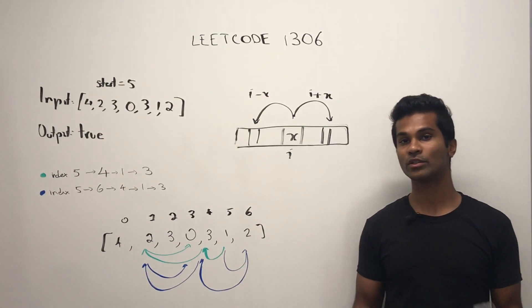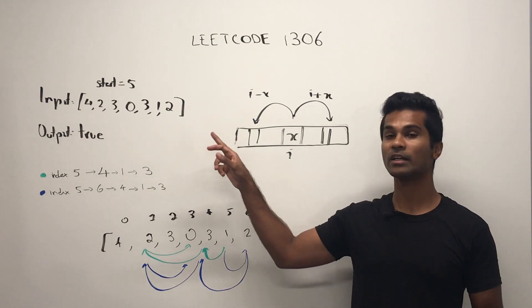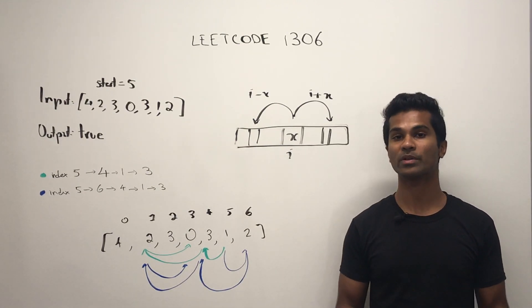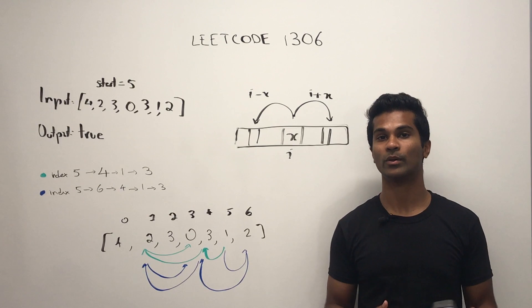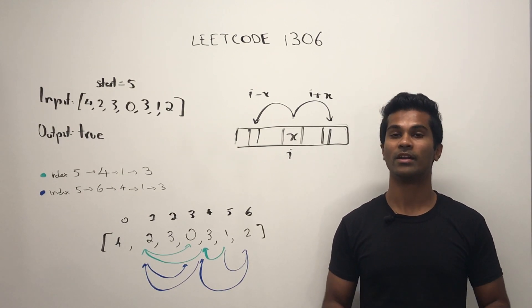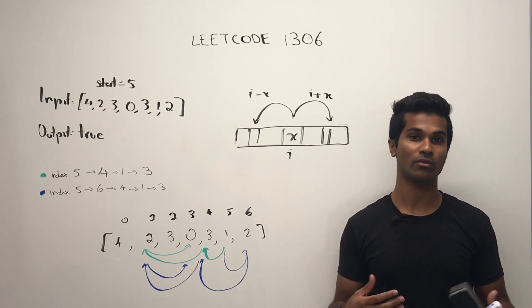So what we need to do is start at index start and try jumping to an index whose value is zero. If we can find even one, then we just return true, and if we can't find any, then we return false.